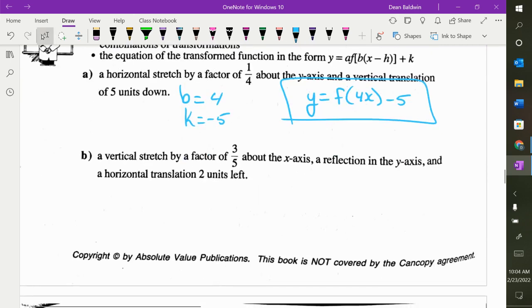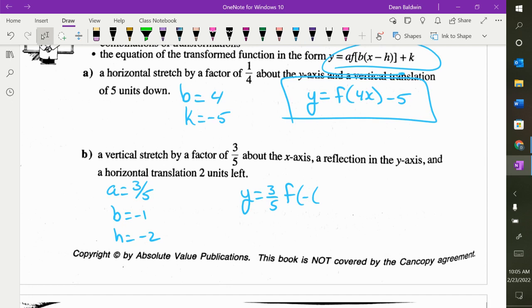Last one for today. Vertical stretch by a factor of three fifths. What is that? That's an A value of three fifths. Reflection in the Y axis. That's a B value of negative one, because you're going across the Y axis. And horizontal translation two units left, so H is negative two. We're going to plug it into this thing. Y is equal to, A is three fifths, f of B is negative one, and what do I write in here? It's X minus H, so that turns into X plus two. There's no K value because it didn't say anything.